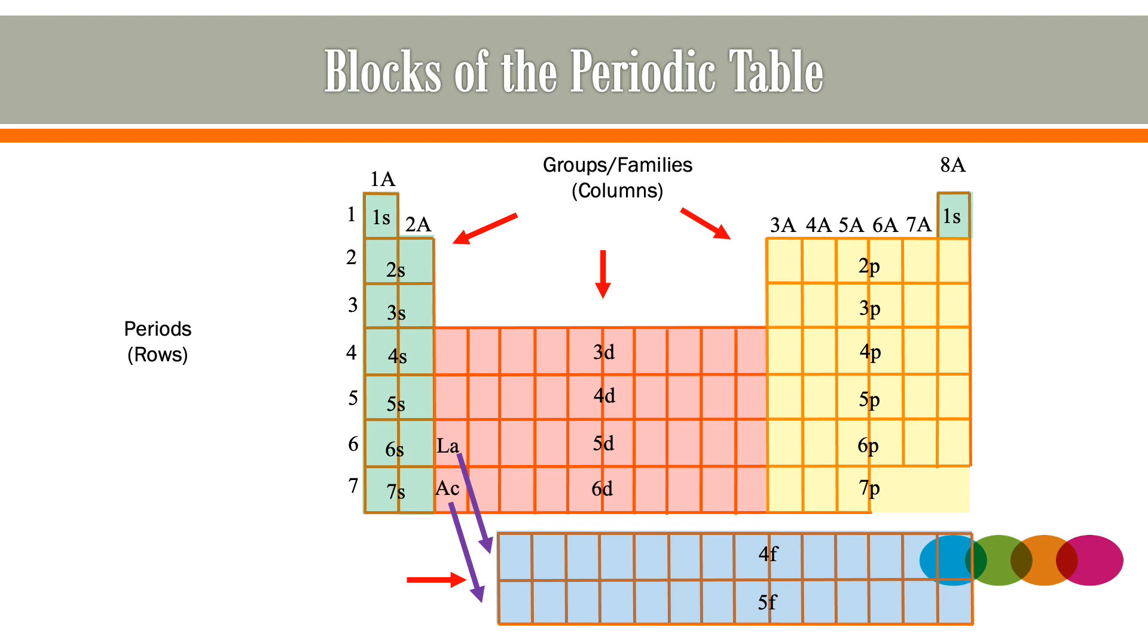Notice how the f-block appears right after lanthanum and actinium in periods 6 and 7 respectively. Also an important note, helium, on the top right-hand corner, is part of the s-block.